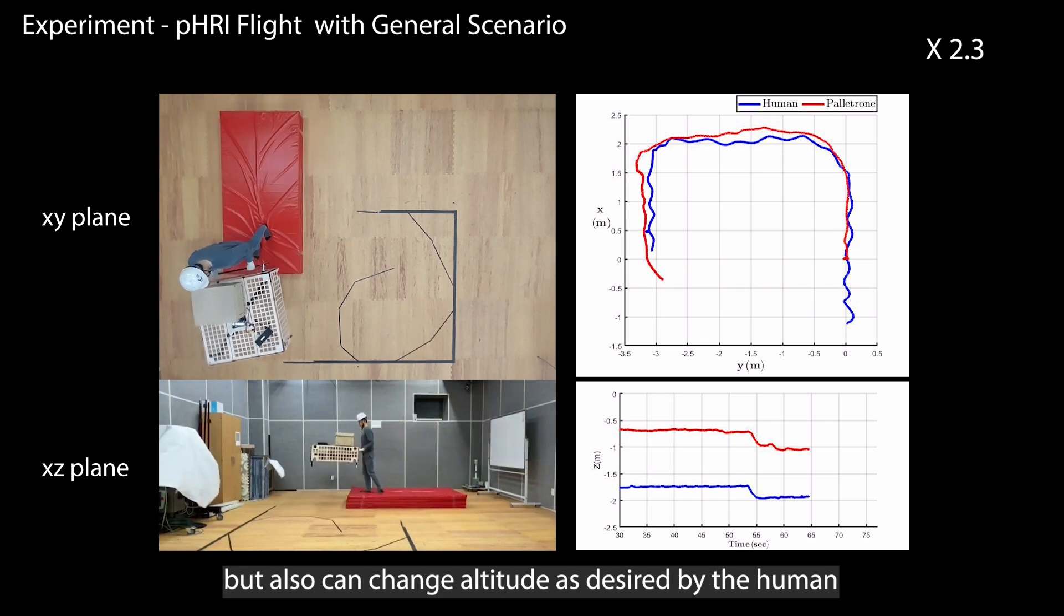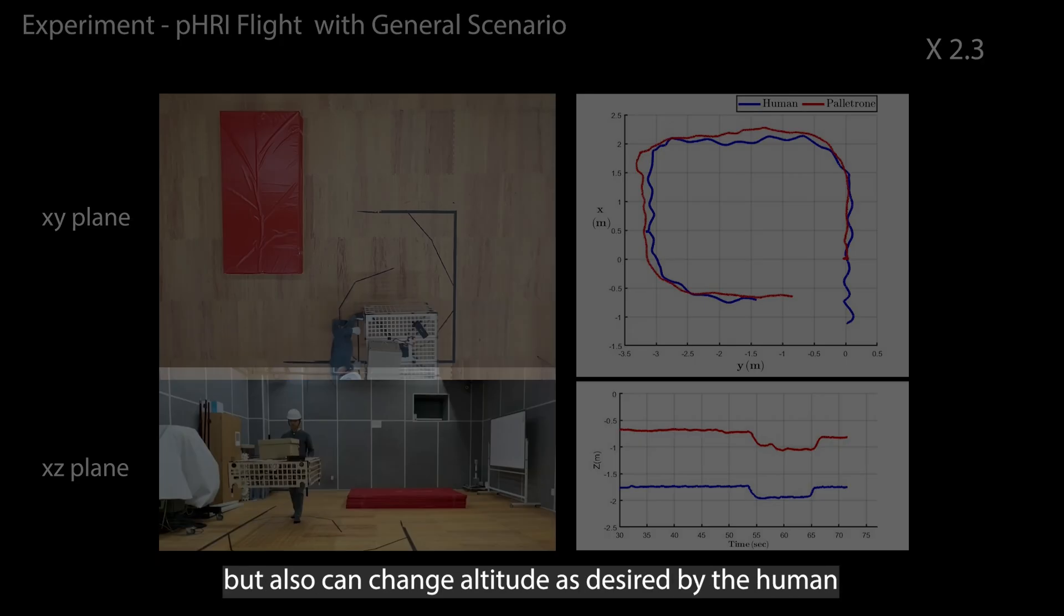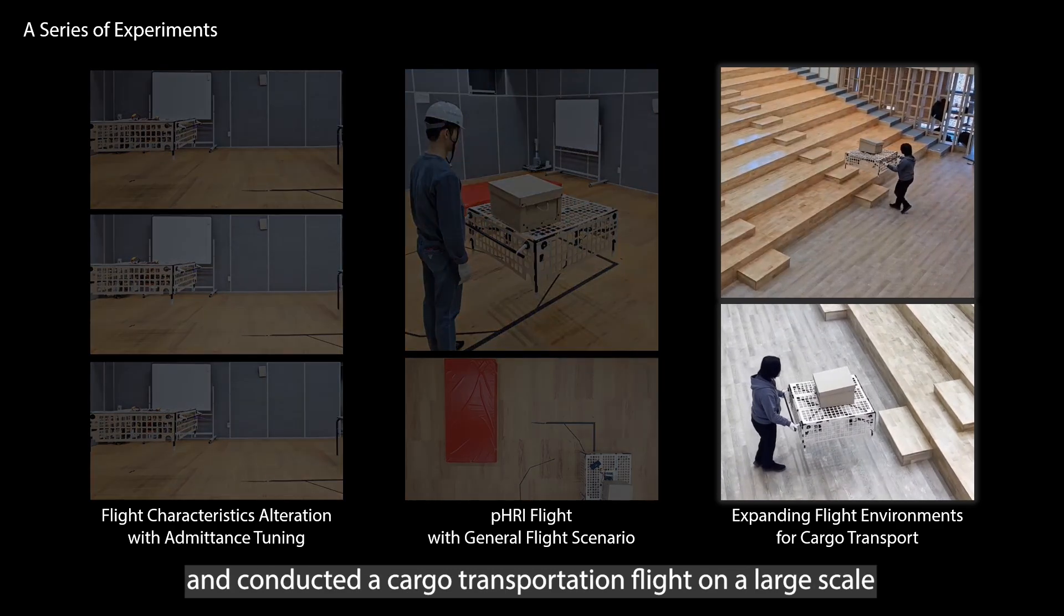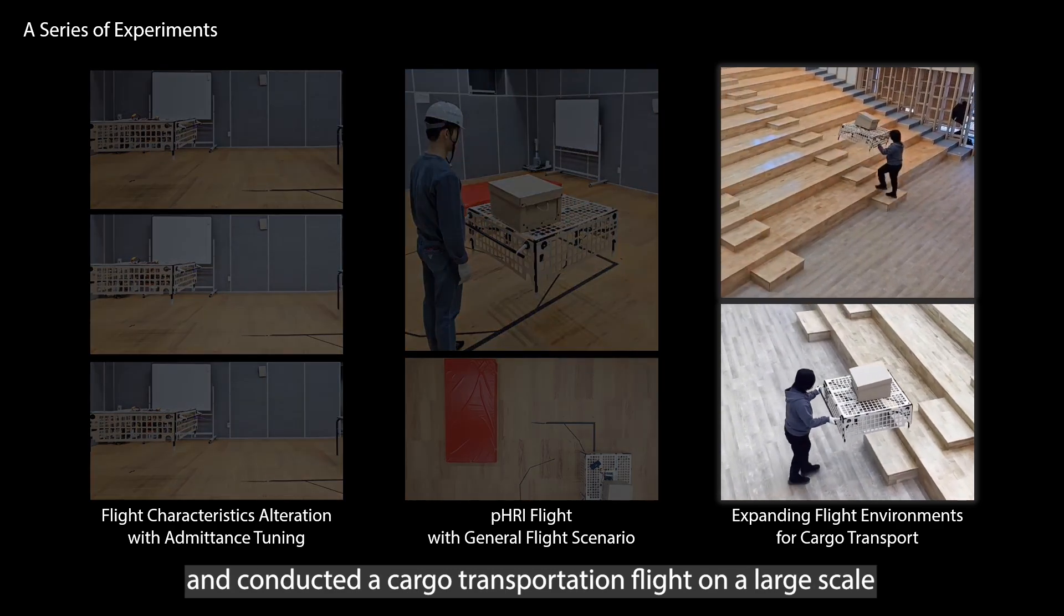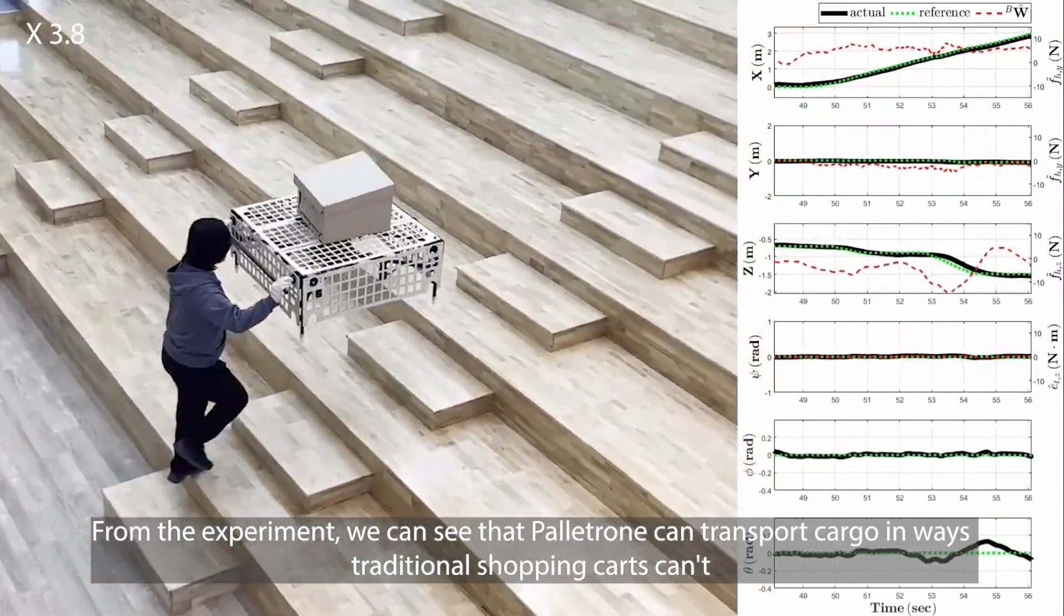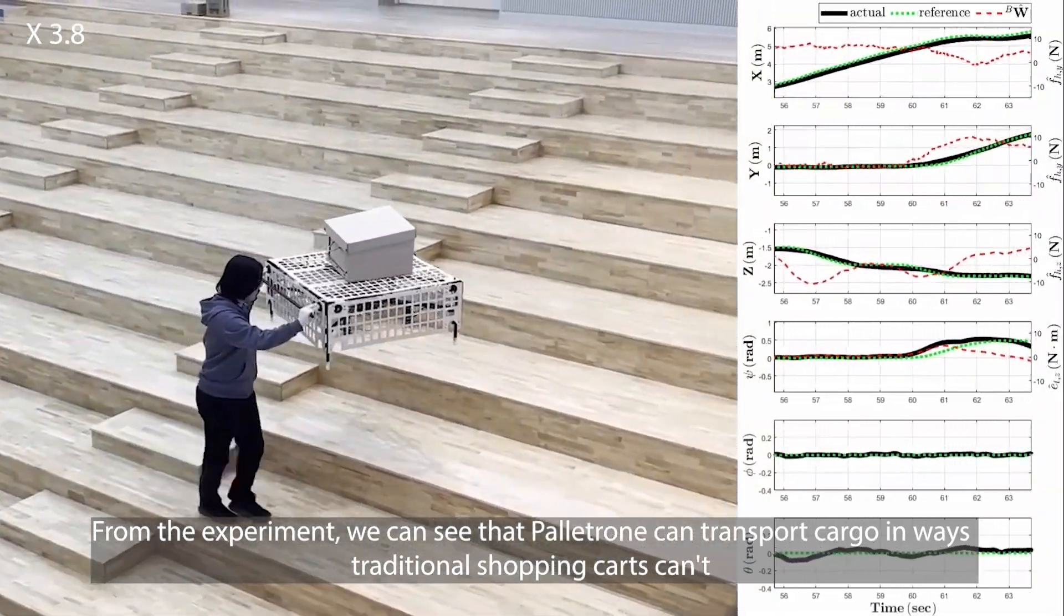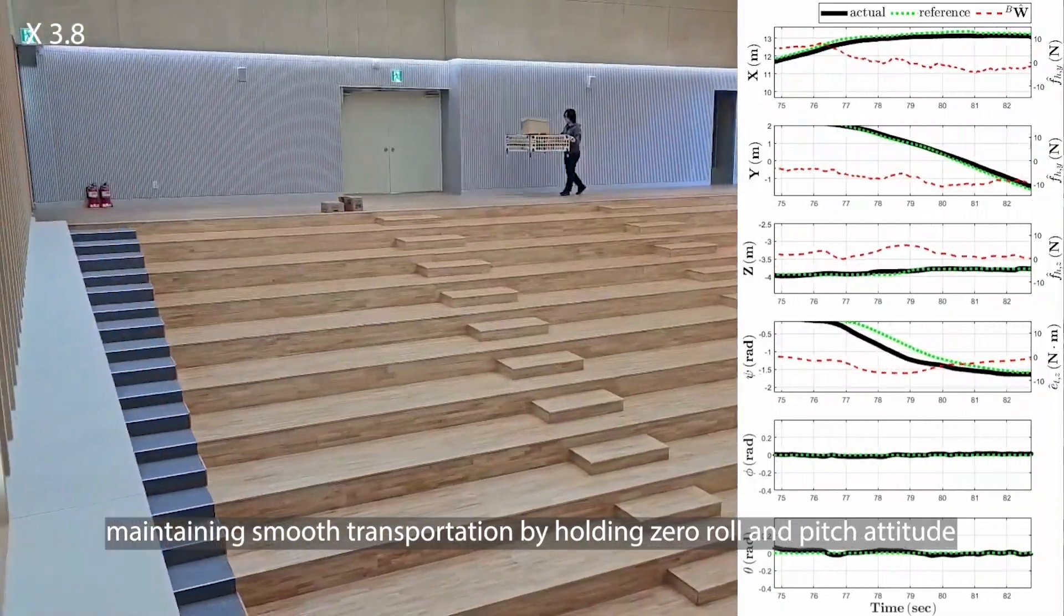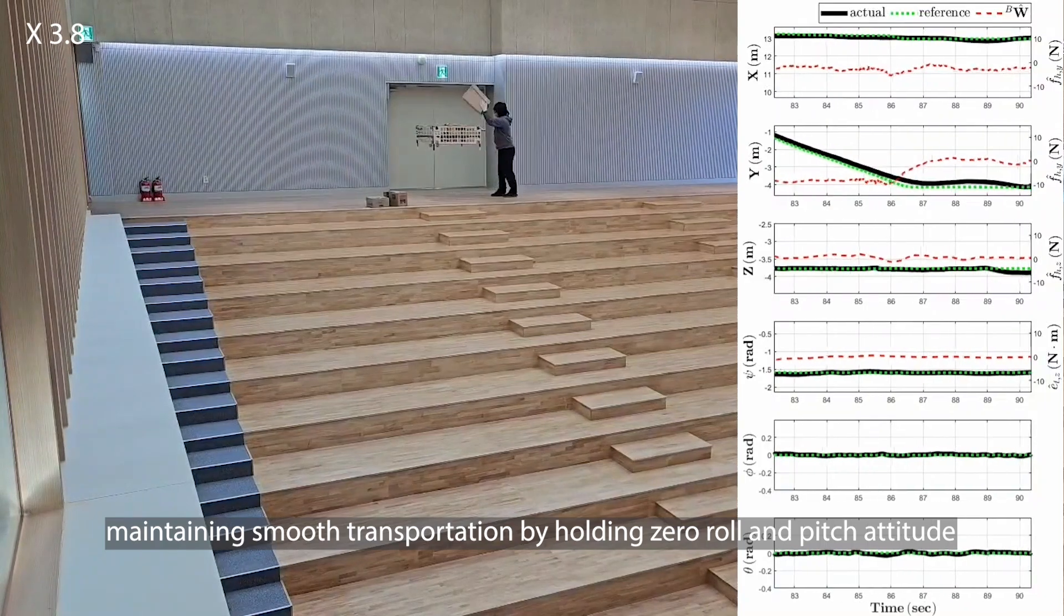In the final experiment, we expanded the flight environment and conducted a cargo transportation flight on a large scale. From the experiment, we can see that Palletron can transport cargo in ways traditional shopping carts can't, maintaining smooth transportation by holding zero roll and pitch attitude.